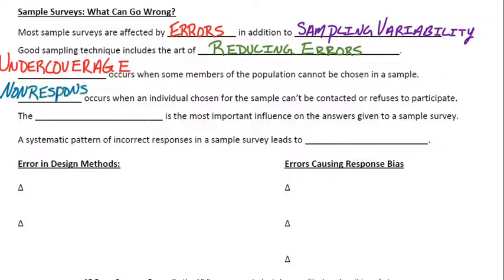The next one is non-response. Non-response is also an error. That occurs when an individual chosen for the sample, you can't get a hold of them, you can't contact them, or they just refuse to respond. If you send out, if you choose people for the sample, and for some reason you can't get their responses back, then that would be a form of non-response.